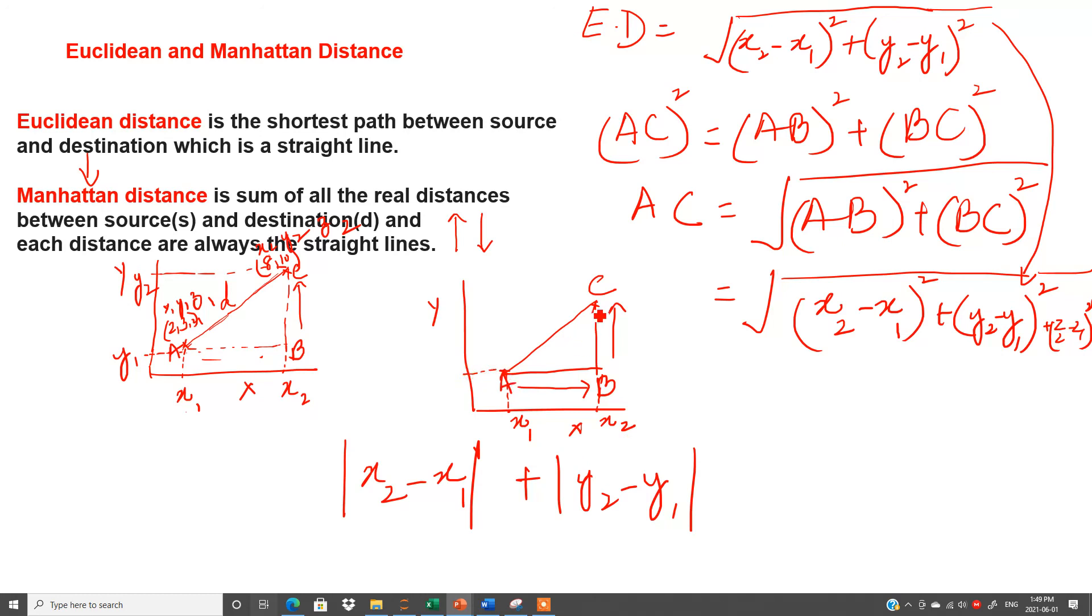And if I will make the projection of B, C on y-axis, so this is y2, this is y1. And these are the absolute terms. Absolute terms means if our answer will be in negative, suppose this is 4, this is minus 8. So definitely the answer will be minus 4. But we have to consider positive. That is why we have to use absolute term.